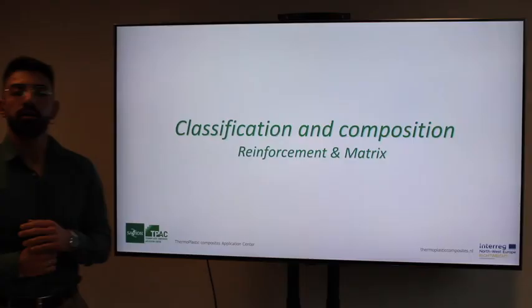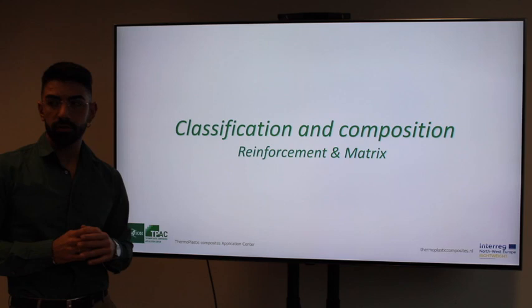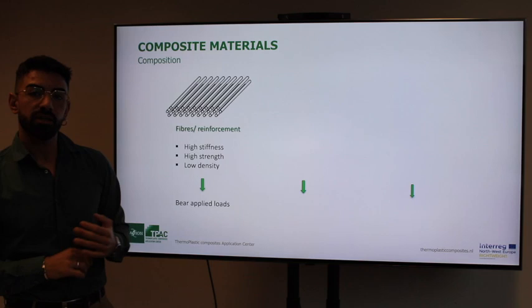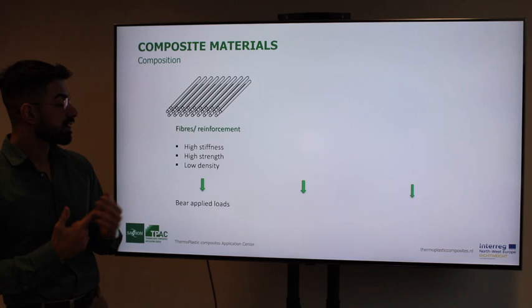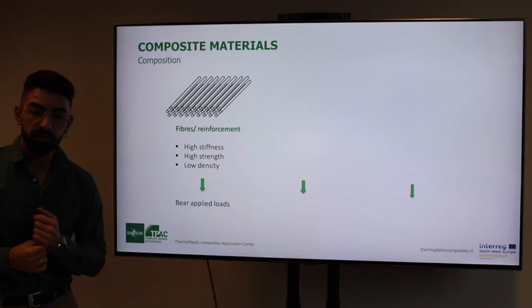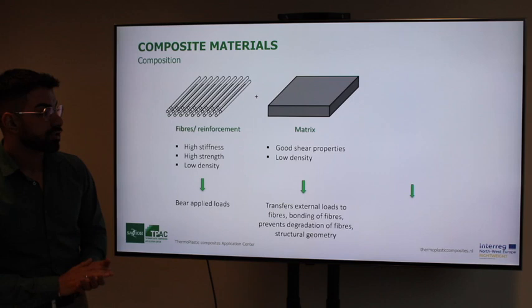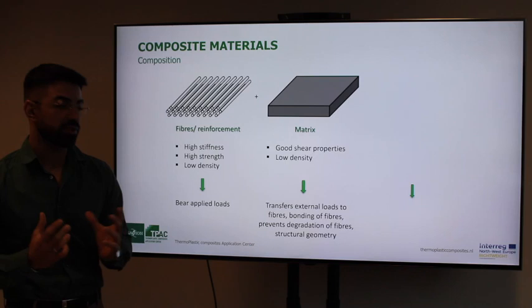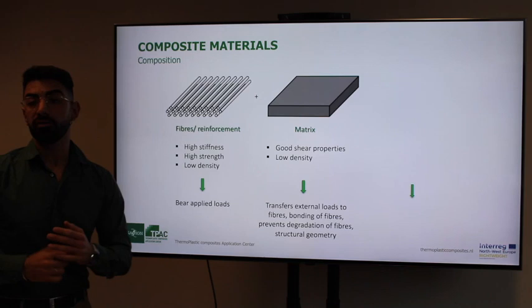Going more specifically to the classification and composition of composite materials, we focus first on reinforcement and matrix. Fibers have high mechanical properties — high stiffness, high strength, and low density — and their main objective is to bear and withstand the applied loads. The matrix has good shear properties and low density; its main aim is to transfer external loads to the fibers, bond and protect the fibers from degradation, and eventually provide structural geometry to the composite.